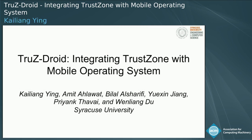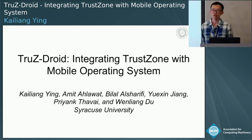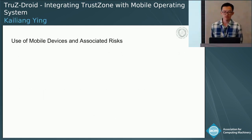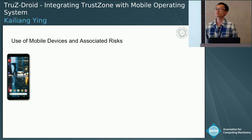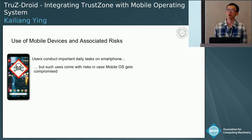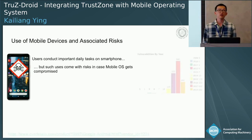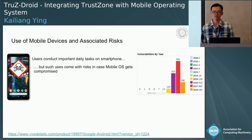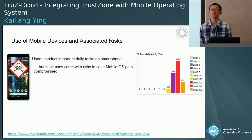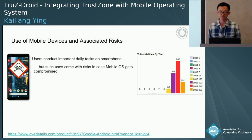Hi everyone, thanks for the introduction. I will present our work TrustJoy, integrating TrustZone with mobile operating systems. These days users conduct most of their daily activities on smartphones, however some activities will be at risk in case the underlying operating system is compromised. Using Android CVEs as an example, vulnerabilities keep increasing over the last decade, and among these, some could lead to compromise of the OS.